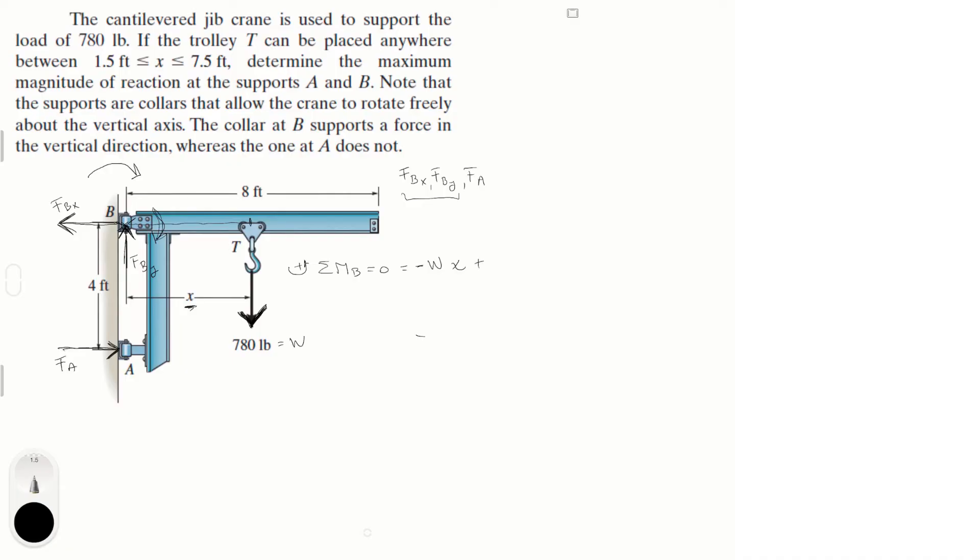Plus the moment generated by F of A, which is trying to turn the whole unit counterclockwise, trying to make up for what the weight is doing. And it is equal to F of A times the distance from B to A, which is 4.